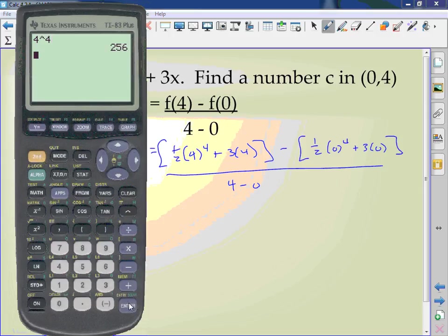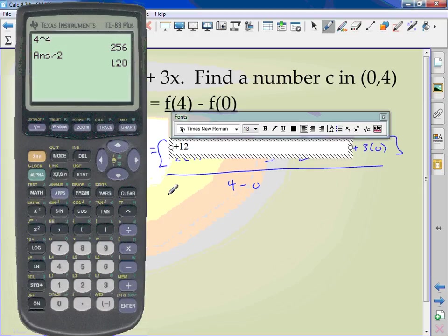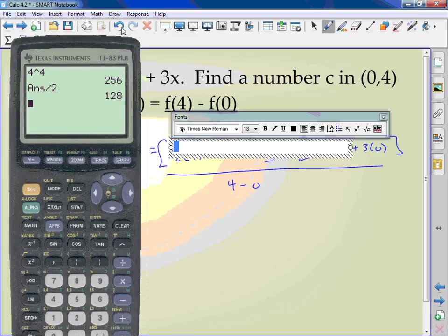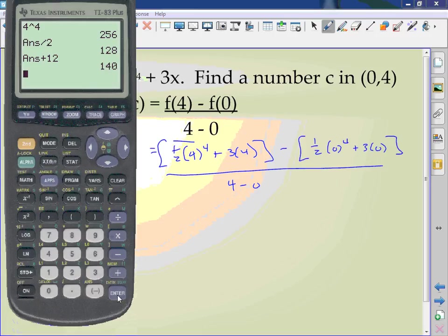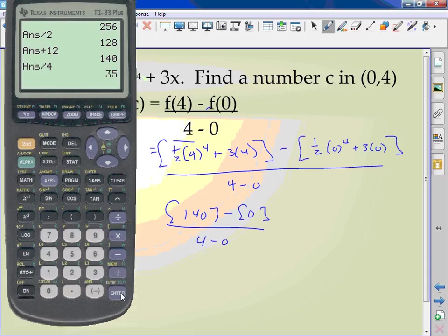4 to the fourth is 256, plus a half is 128. And 3 times 4 is 12. So I have 140 minus over here it's going to be nothing over 4 minus 0, which is 4. So I have 140 divided by 4, and I get 35.